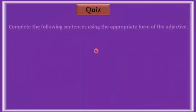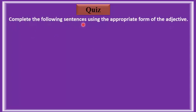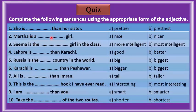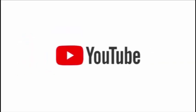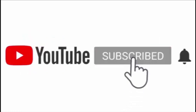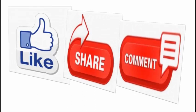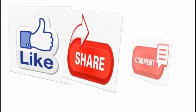Now it's your quiz time! Complete the following sentences using the appropriate form of the adjective. You have been given two choices: A and B. Pause the video, see what fits in the blank, then write your answers in the comment box. If you have any difficulty or suggestions, you can write in the comment box. Thanks for watching.